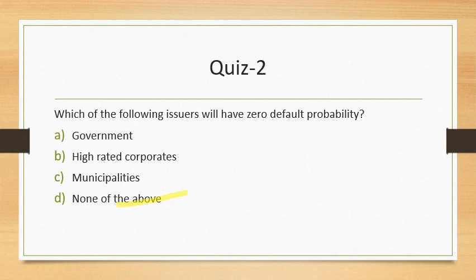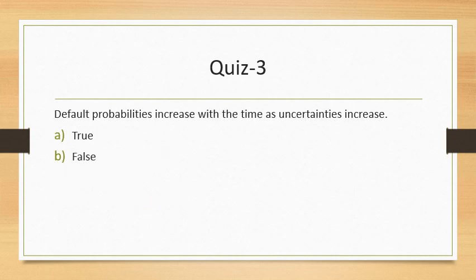Question 3: Default probability increases with time as uncertainties increase — is this statement true? For a shorter period, the default probability is less. The probability that someone defaults in one day is much less than in 10 days, and even higher over 10 years compared to one year, because uncertainties would be greater. So the answer is true.